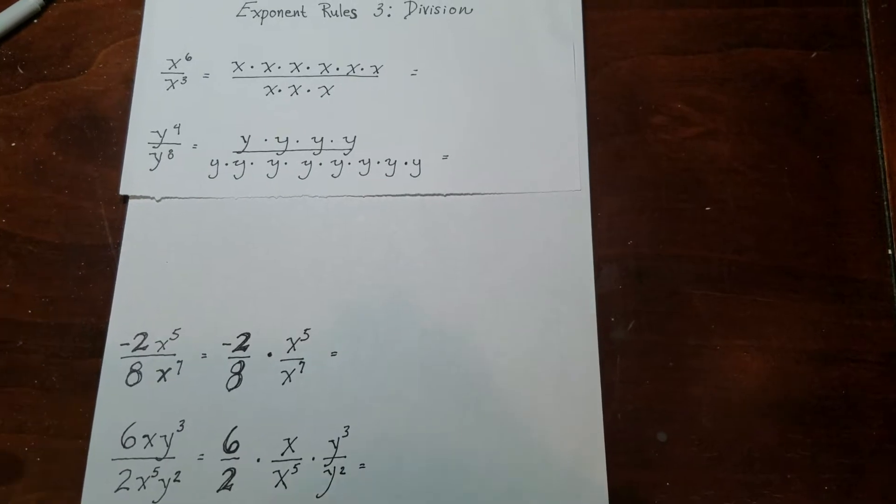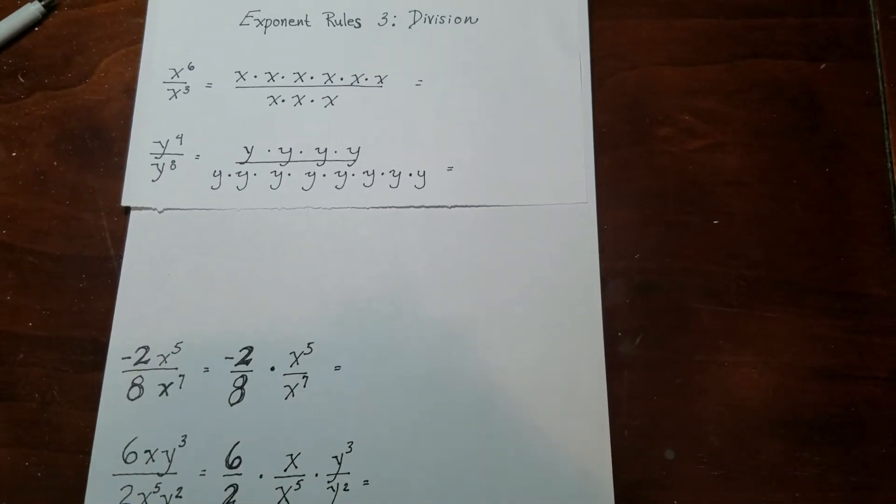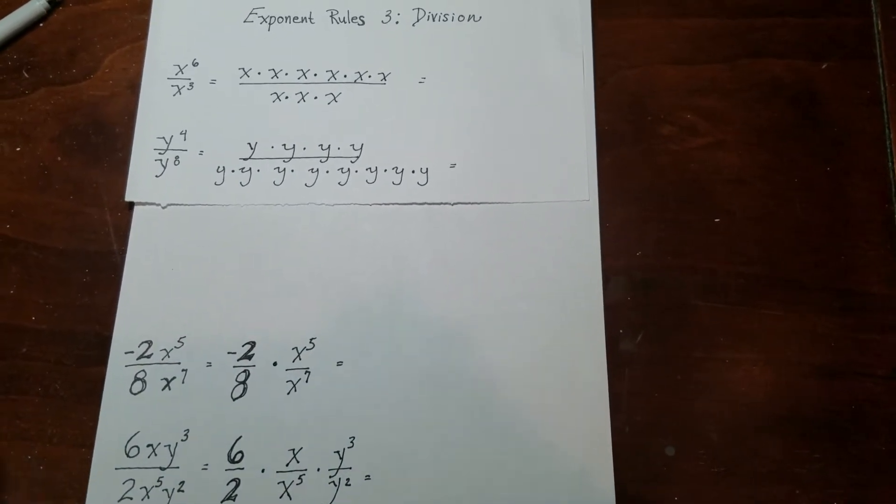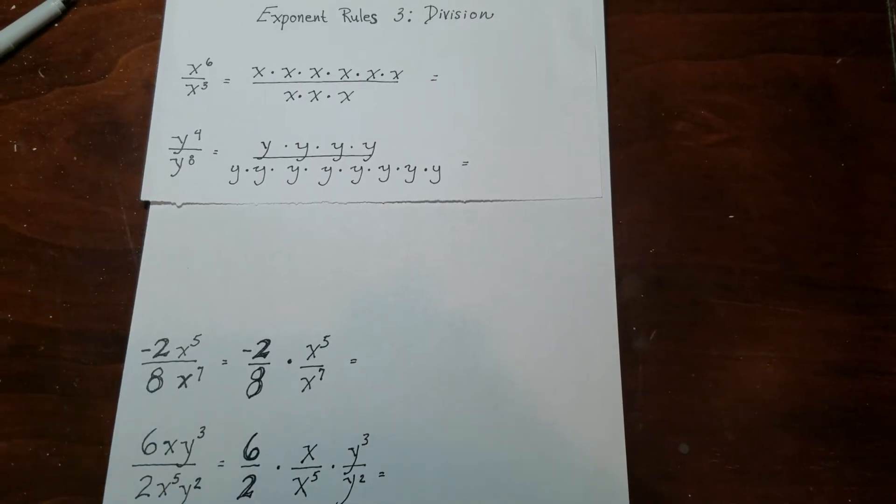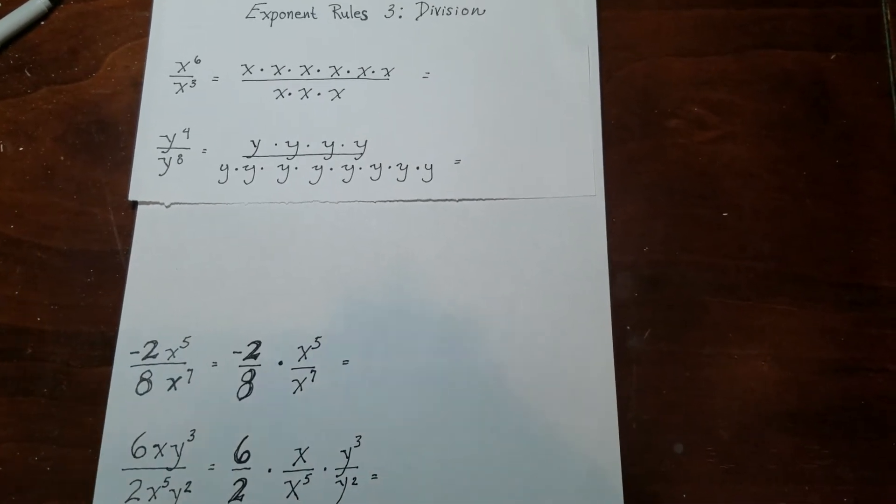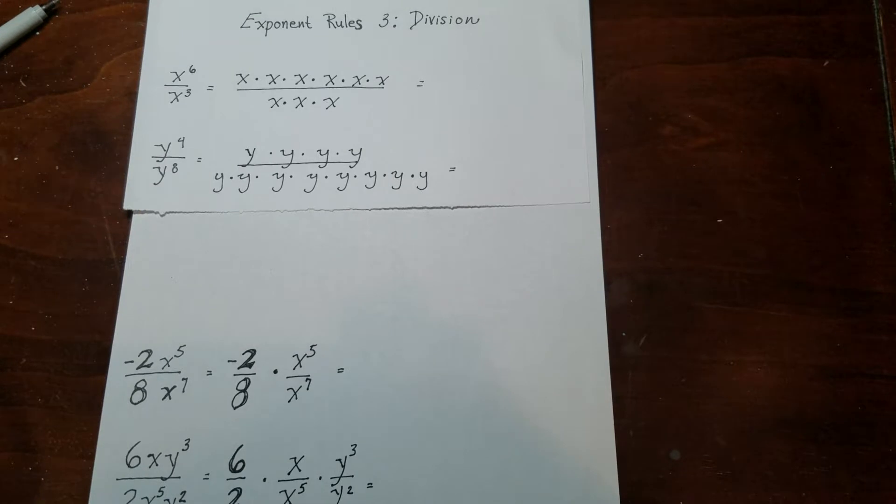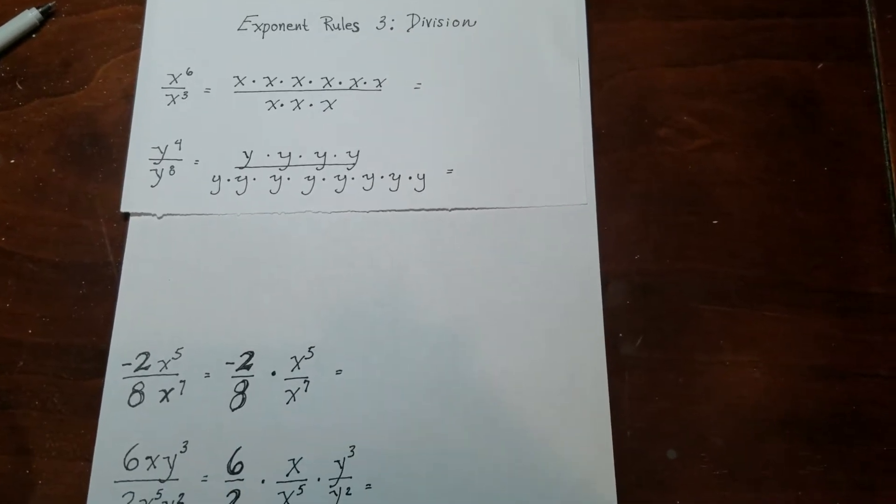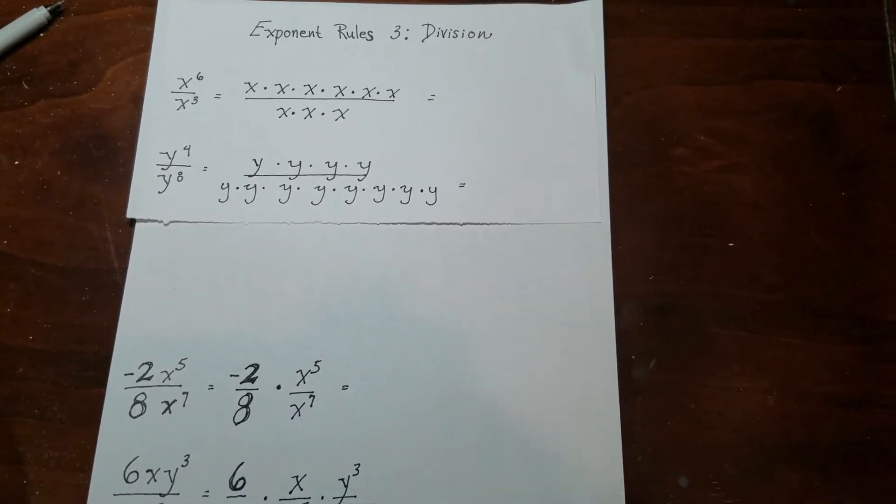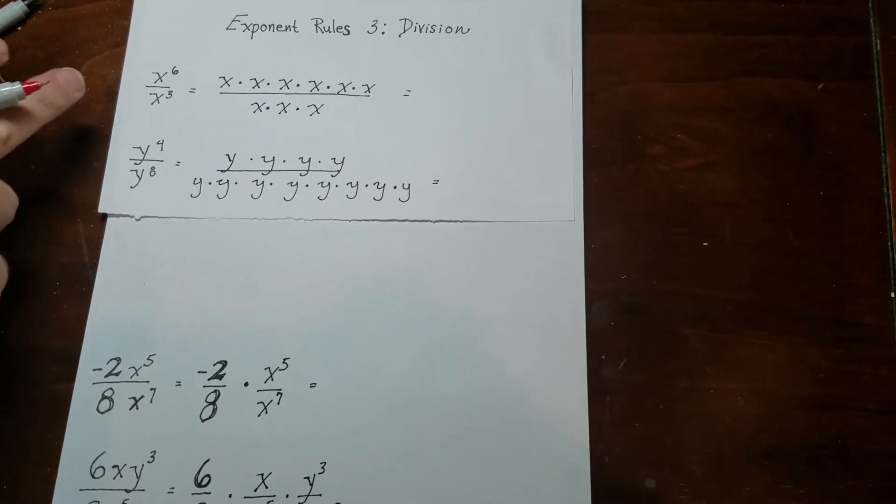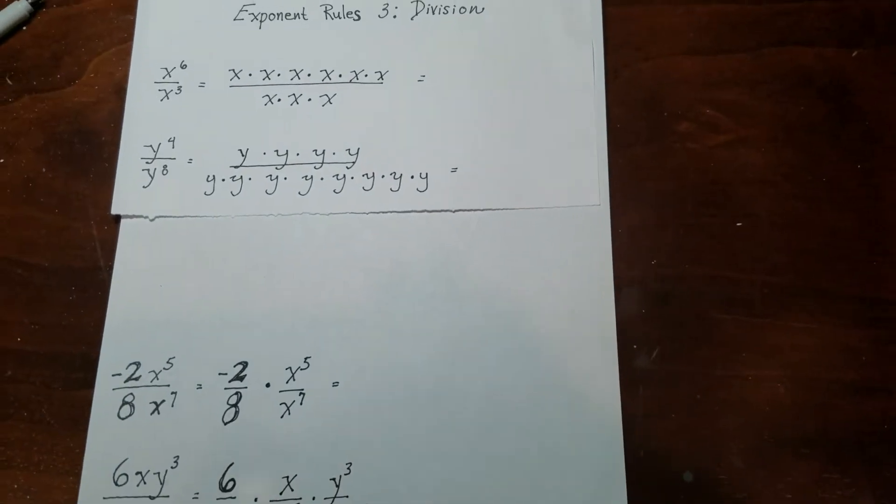So we could actually, to be honest with you, you could look at this as division. You can also look at this as simplifying fractions. They're both really the same thing. But anyways, now that I've done that, let's talk about how to do this. So if I have x to the 6 over x to the 3, it is certainly not simplified. It is certainly not divided. This also means x to the 6 divided by x to the 3rd.